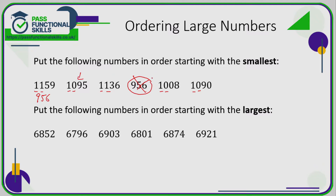Since they all begin with one zero, let's look at the third column. We've got a nine, a zero, and a nine. Zero is less than nine, so the number with a zero in the third column must be the next smallest. We're now comparing 1095 and 1090 — both begin with 109, so we need to look at the final digit.